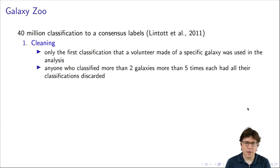The first step that they went through was a process of cleaning. For example, only the first classification that a volunteer made of a specific galaxy was used in the analysis. Because sometimes a volunteer who might be trying to add in bogus data would classify the same galaxy multiple times. Also, anyone who classified more than two galaxies more than five times had all their classifications discarded. Whenever you open something up to these volunteers, you're going to have to go through a cleaning process like this. Although the cleaning process varies from project to project. Part of the reason we're going through this process of how they form the consensus classifications is that, although the details are specific to this study, the three steps occur in lots of studies. So the first step is cleaning.